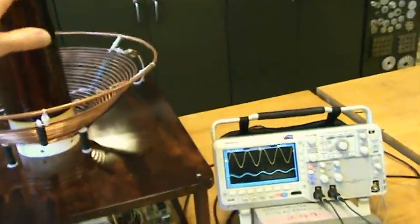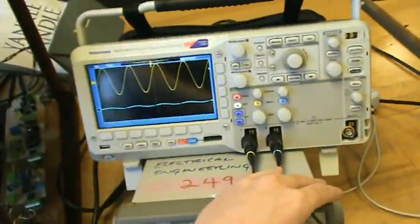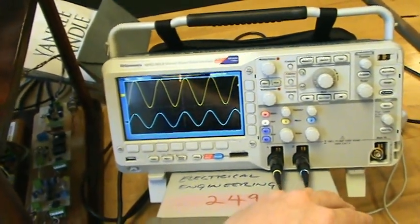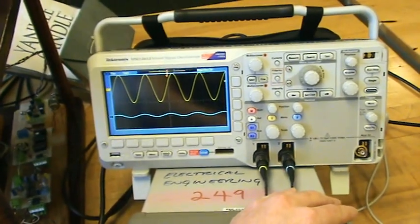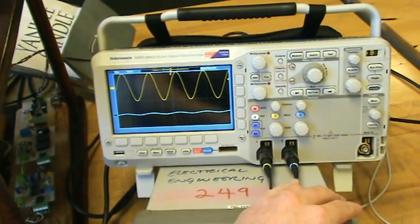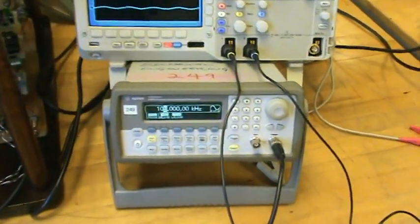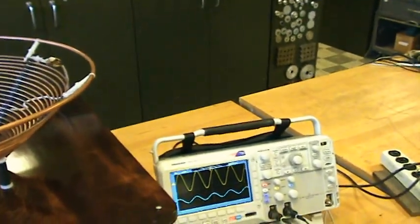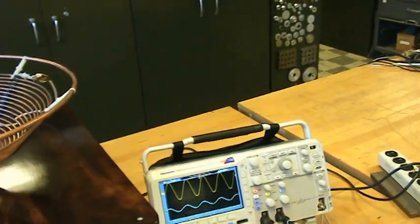The usual method is you tune the frequency to wherever it happens to be the lowest amplitude on the output, and that's right about there at 106 kilohertz. Of course, that has to be done when you're standing away from the coil, because if you put your hand next to it or stand near it, that changes the capacitance.